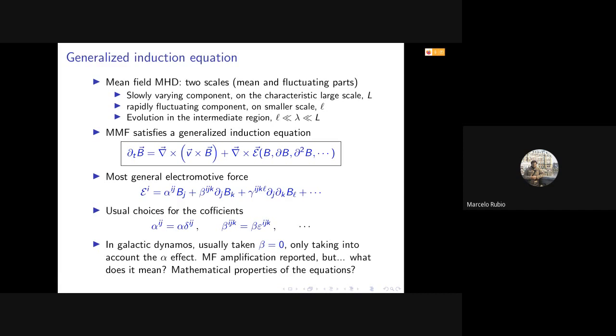Basically, this generalized induction equation takes into account the first term—this is the ideal MHD—plus the curl of some electromotive force that in the most general way can be written as a series of the magnetic field strength and also spatial derivatives of it, which are weighted by some coefficients. People usually in astrophysics choose these coefficients to be fairly homogeneous, just depending on one or two scalars.